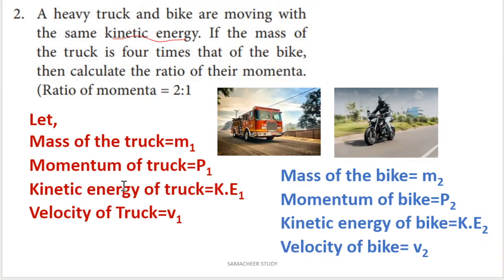The first question is: a heavy truck and a bike are moving with the same kinetic energy. If the mass of the truck is 4 times that of the bike, calculate the ratio of their momenta.